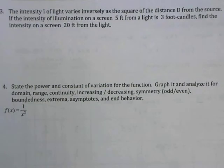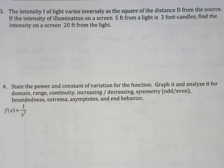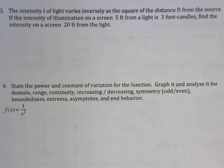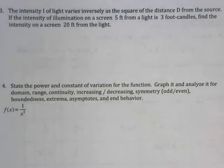Let's start with the first problem. It says the intensity I of light varies inversely as the square of the distance D from the source. If the intensity of illumination on a screen 5 feet from a light is 3 foot-candles, find the intensity on a screen 20 feet from the light. I can already sense that just the fact this is a word problem with a lot of unusual terminology is probably going to be the hardest part of this problem.